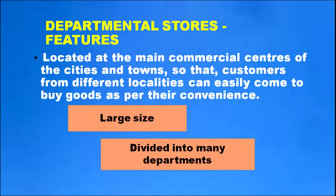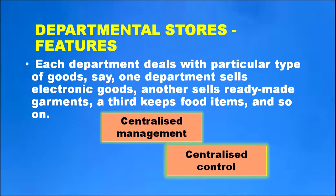Departmental stores are located at the main commercial centers of cities and towns, making it convenient for customers to come and buy goods. Departmental stores are large in size and various departments are maintained for each category of product. For example, electronic goods under one department, ready-made garments under another department, and food items under yet another department.